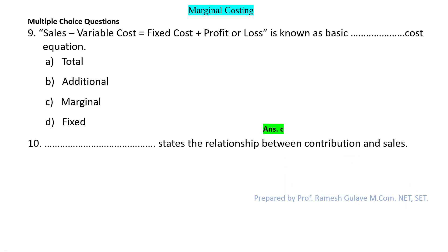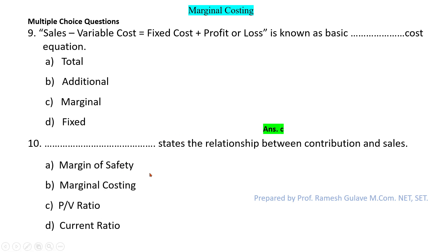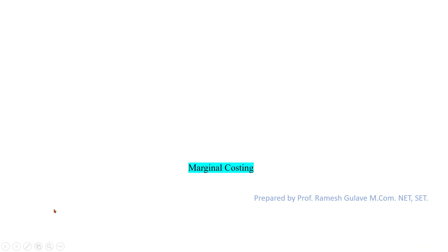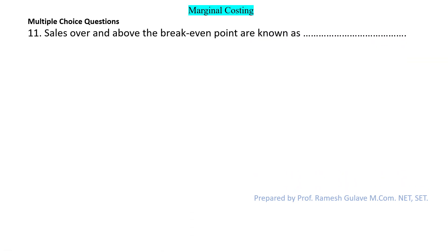The next question asks about what states the relationship between contribution and sales. In the PV ratio, we use contribution and sales: PV ratio equals contribution divided by sales multiplied by 100. So option C — PV ratio — is the right answer.